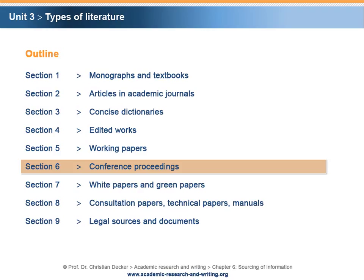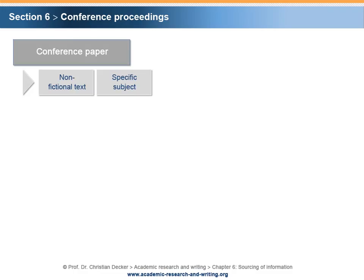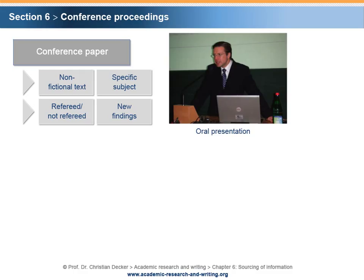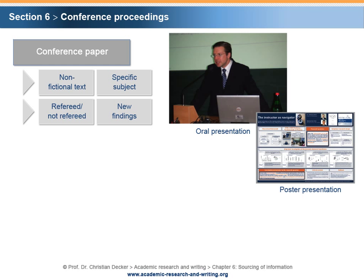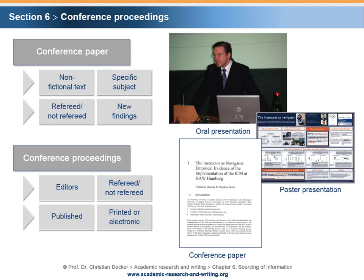Section 6: Conference Proceedings. An academic conference paper is a non-fictional, self-contained text that deals with a specific subject. Conference papers can be refereed or not refereed by conference hosts and selected experts. Typically, the purpose of a conference paper is to present research not yet published. Its presentation may be accompanied by an oral presentation and/or a poster presentation. Normally, academic conference papers are published as conference proceedings, a special type of edited book. Editors of the conference proceedings may be a group of persons that organized the academic conference and/or external experts. The publication may or may not be accompanied by a formal review process. Conference papers are made available in printed or electronic form.